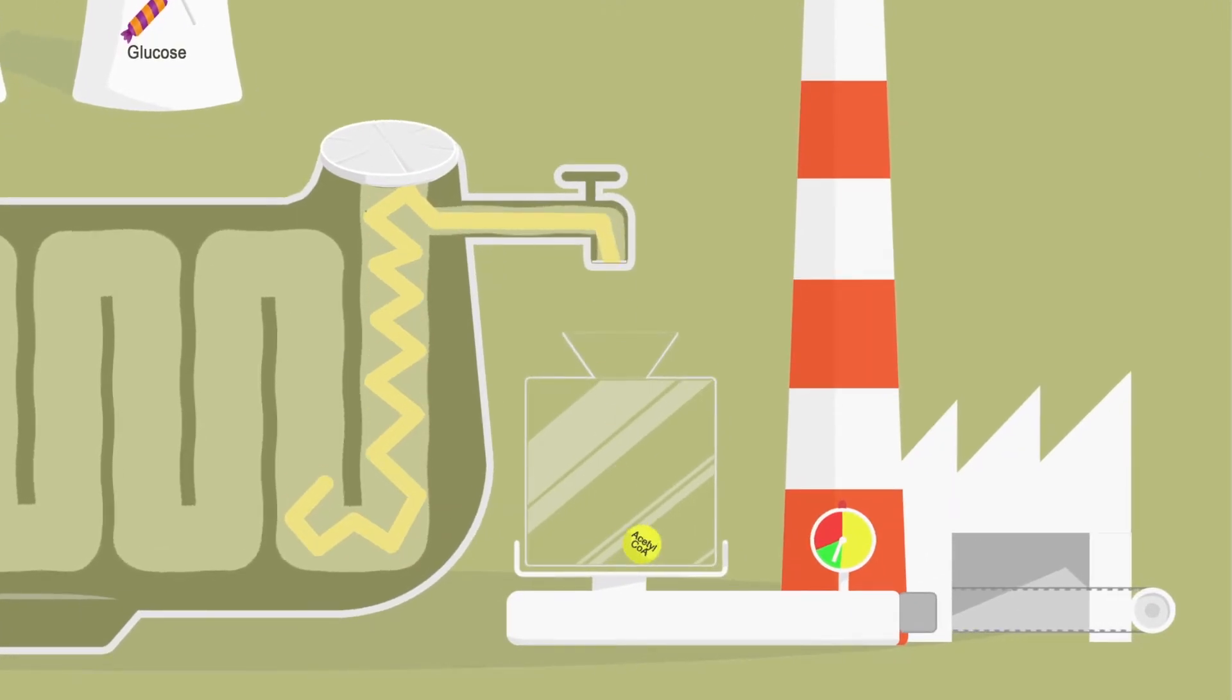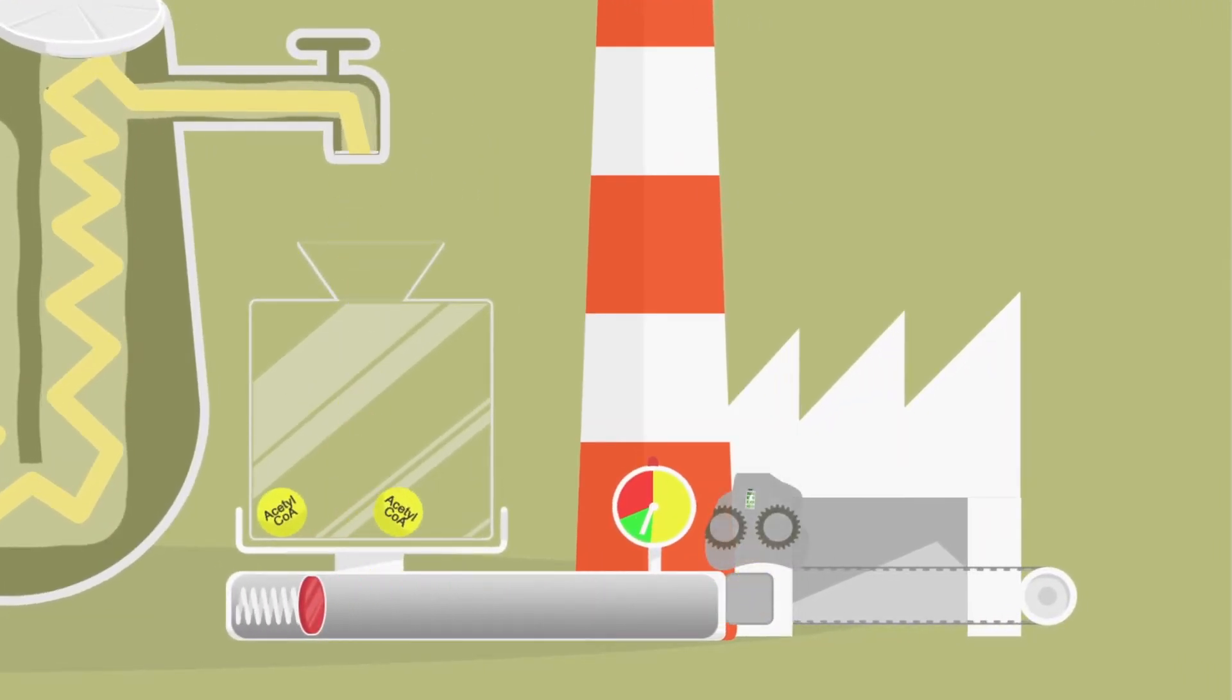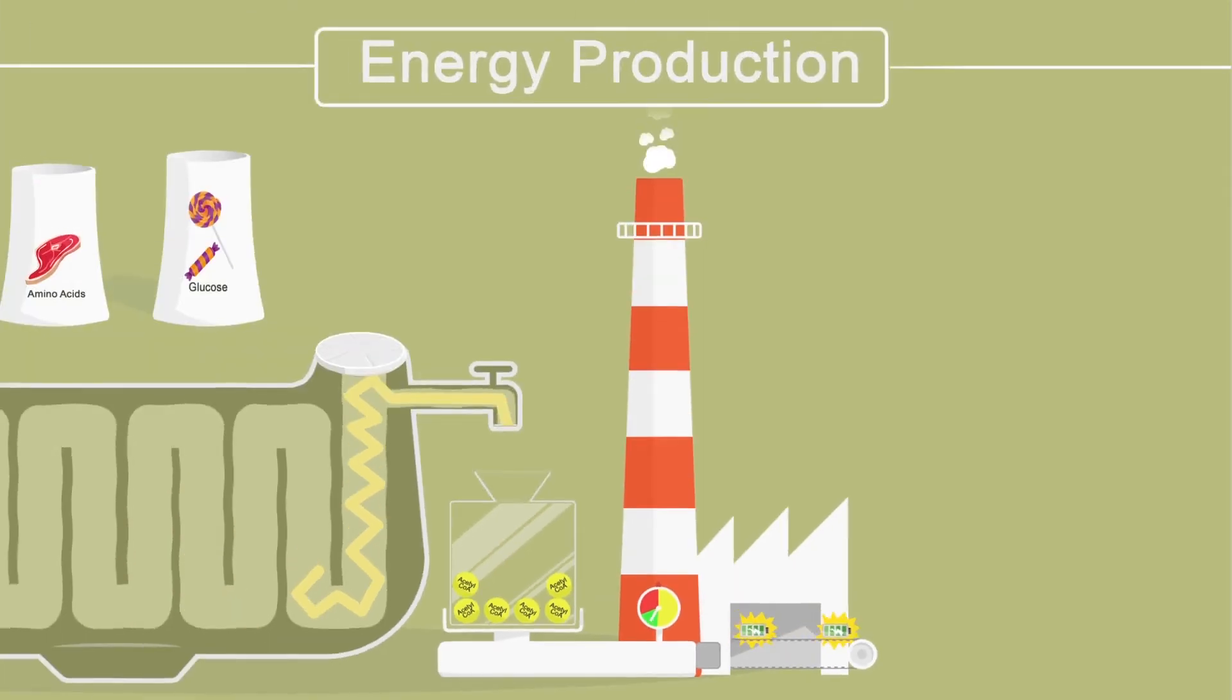The breaking down of fatty acids releases acetyl-CoA, which enters the Krebs cycle. The Krebs cycle is a series of chemical reactions to generate ATP, a form of energy.